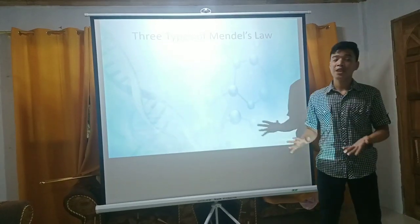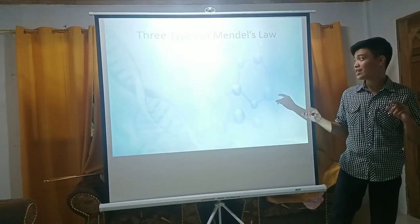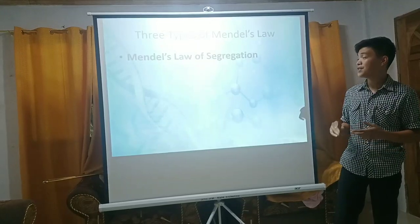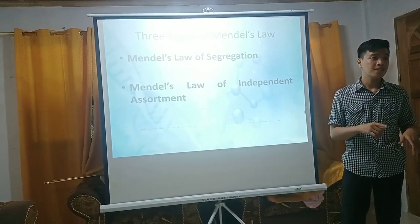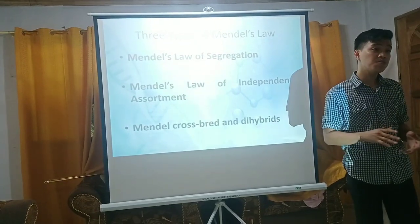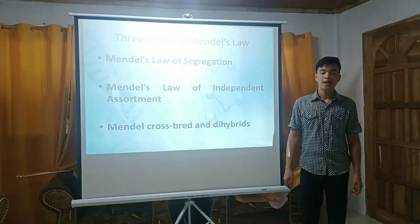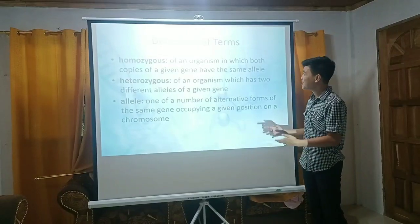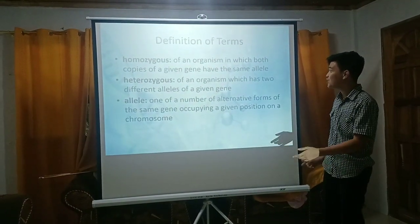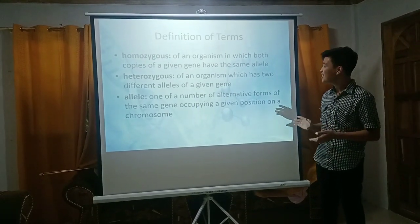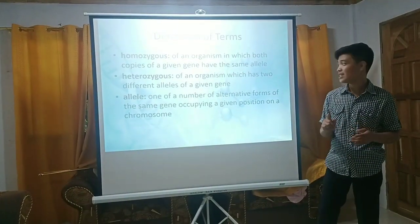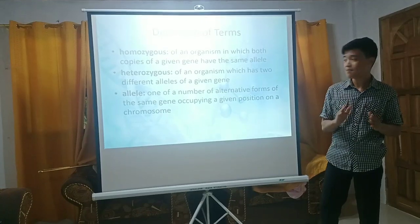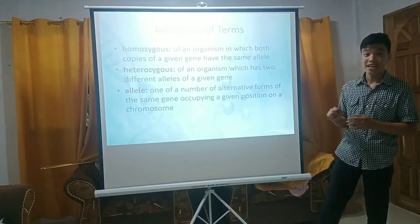In continuation with our topic yesterday, there are three types of Mendel's Law: Mendel's Law of Segregation, Mendel's Law of Independent Assortment, and Mendel's Law of Crossbreeding and Dihybrids. Before we go deeper, let us define the following terms. Homozygous refers to an organism in which both copies of a given gene have the same allele. Heterozygous refers to an organism which has two different alleles of a given gene. And allele is one of a number of alternative forms of the same gene occupying a given position on a chromosome.